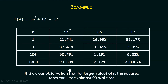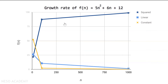From this, it is clear that for larger values of n, the squared term consumes almost 99% of the time. If you had taken n equal to 1 and said 12 is taking the most time, the reality is different. As you increase the value of n, you can clearly see which term takes the most time. Visualizing the growth rate, you can see the squared term's growth dominates, while the constant term initially appears high but declines faster.